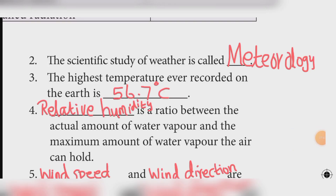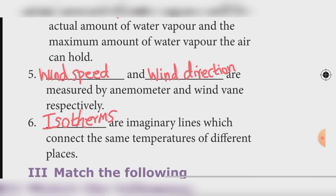Third: The highest temperature ever recorded on Earth is 56.7 degrees Celsius. Fourth: Relative humidity is the ratio between the actual amount of water vapor and the maximum amount of water vapor in the air. Fifth: Wind speed and wind direction are measured by anemometer and wind vane respectively. Sixth: Isotherms are imaginary lines which connect the same temperatures of different places.